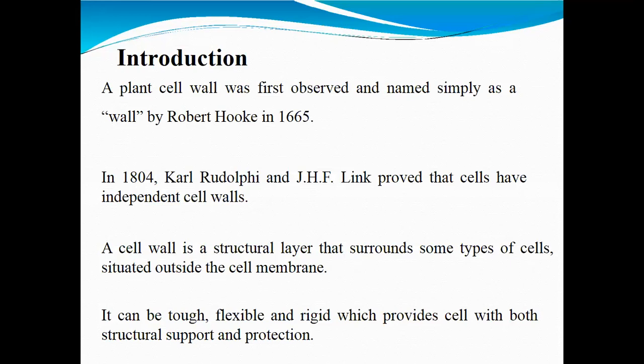Plant cell wall was first observed and named simply as 'wall' by Robert Hooke in 1665. However, Professor Kold and Lincoln in 1805 proved that cells have independent cell walls. Every cell has its own independent cell wall, as every plant cell has an independent cell wall.